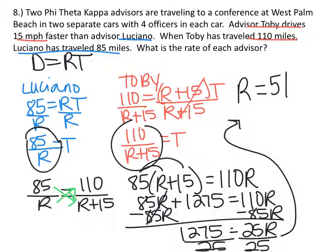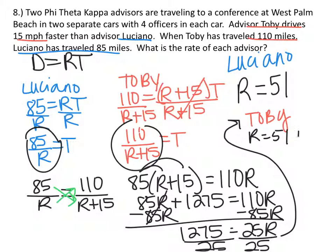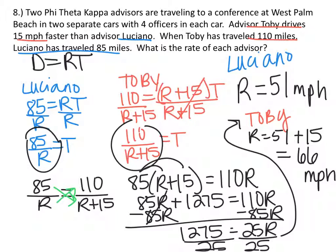R represents Luciano's rate. We know that Toby's rate is 15 miles per hour faster, so Toby's rate is going to be 51 plus 15, which is 66 miles per hour. And Luciano is 51 miles per hour.